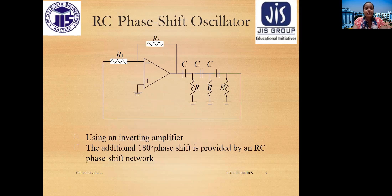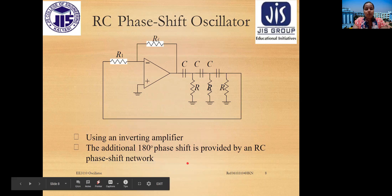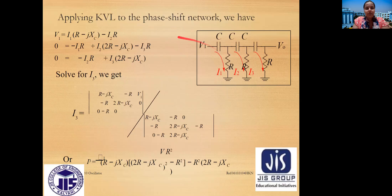The RC phase shift oscillator uses an inverting amplifier with an additional 180-degree phase shift provided by an RC phase shift network. Applying KVL to the circuit, we write equations for V1 in terms of the currents i1 and i2, the resistance R, and the capacitive reactance Xc. For the remaining loops with no supply voltage, KVL gives zero on the left side. Solving using Cramer's rule gives the value of i3.